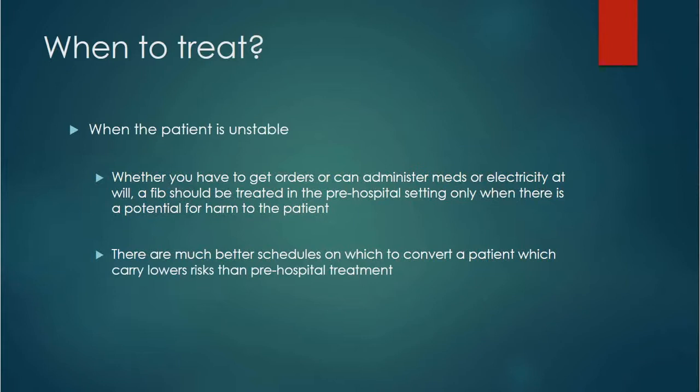So when do we treat it? We treat AFib when the patient is unstable. AFib should be treated in the pre-hospital setting only when there's a potential for harm for the patient, and there's a good reason for that. The schedules on which they convert someone from AFib in the hospital or under the care of a physician can last for weeks. The physicians who are going to fix this person can prescribe anticoagulants — put them on thinners to dissolve any clots that have formed for whatever length of time the person was in AFib. So when they do cardiovert them, whether chemically or electrically, it's much safer for the patient and they're much less likely to throw a clot and have a stroke or a PE.